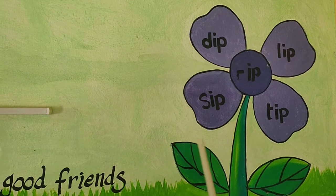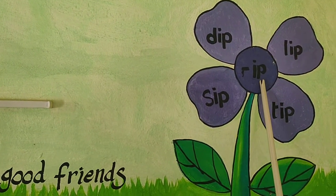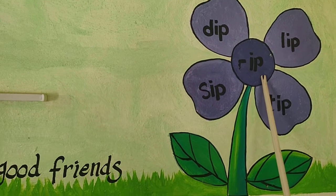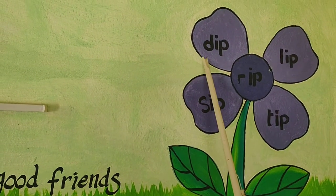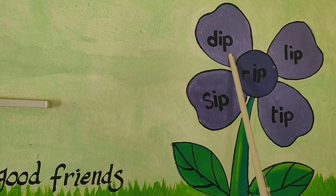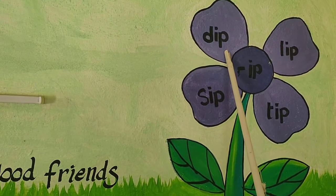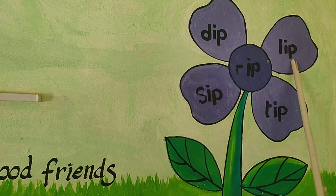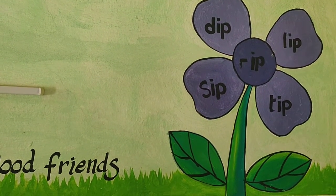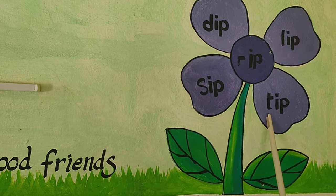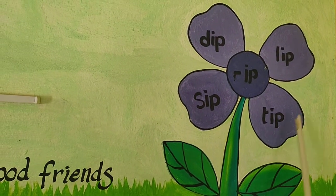Now we learn some words ending with I-P. I-P to end I-A-20. Konyi words ne ch kondho. D-I-P, dip. D-I-P, dip. L-I-P, lip. L-I-P, lip. T-I-P, tip. T-I-P, tip.